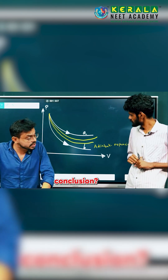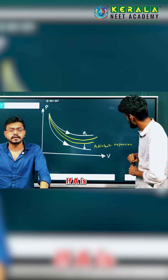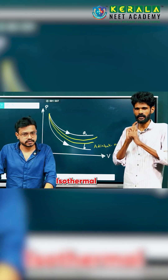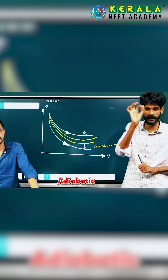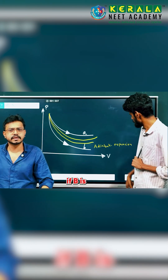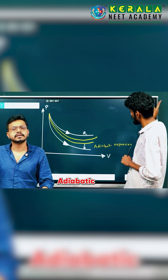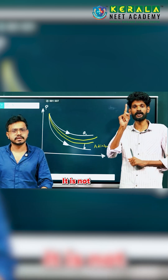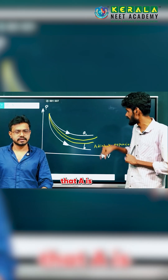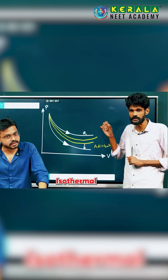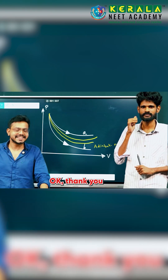So what is the conclusion? If A is isothermal, B must be adiabatic. If B is adiabatic, it is not compulsory that A is isothermal — A may also be adiabatic.